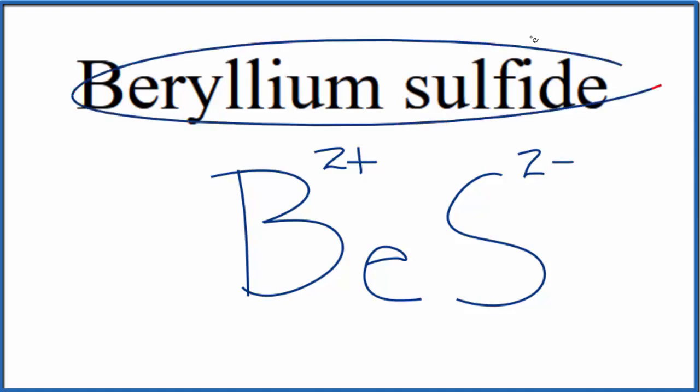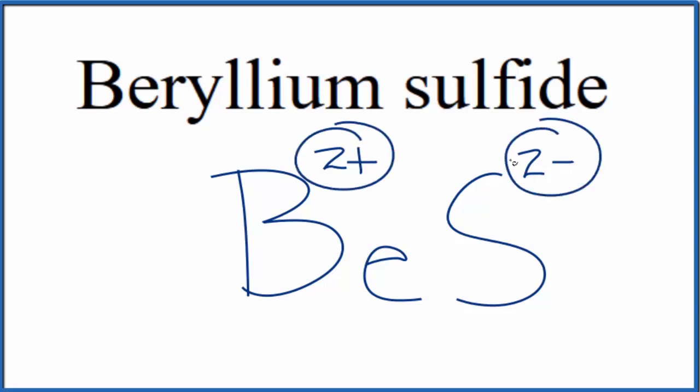Since beryllium sulfide is a neutral compound, doesn't have the word ion after it, these charges need to add up to zero, give us a net charge of zero.